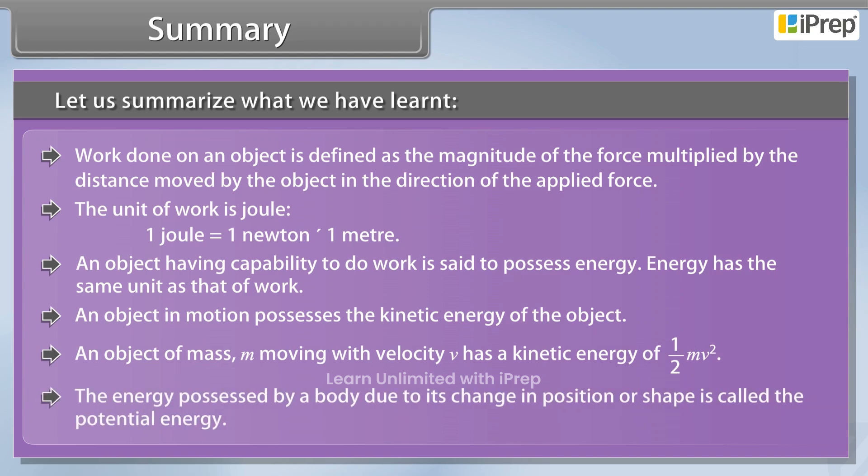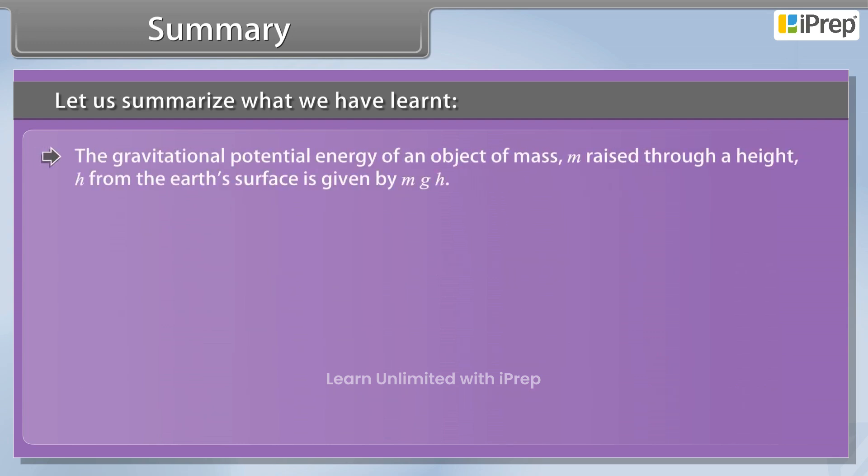The energy possessed by a body due to its change in position or shape is called the potential energy. The gravitational potential energy of an object of mass m raised through a height h from the earth's surface is given by mgh.